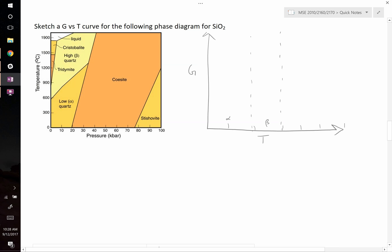We then have a region up to about 1500 where it's tridymite. So again, if that was at 1500, we'll just call that capital T. And then we have cristobalite for that region. And finally, we end up with liquid. So how do we go about sketching this?